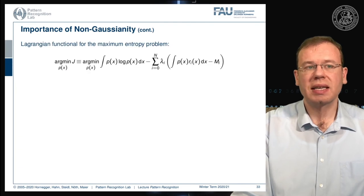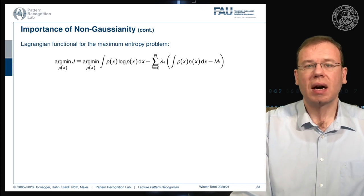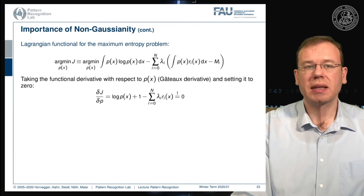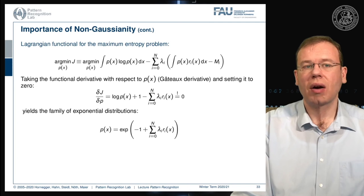We set up a Lagrangian formulation for maximizing entropy, constraining the respective moments to equal the determined values using Lagrange multipliers. Taking the functional (Gâteaux) derivative with respect to p(x) and setting it to zero gives: log p(x) + 1 minus the sum over the individual polynomials constructing the moments equals zero. This yields the family of exponential distributions.